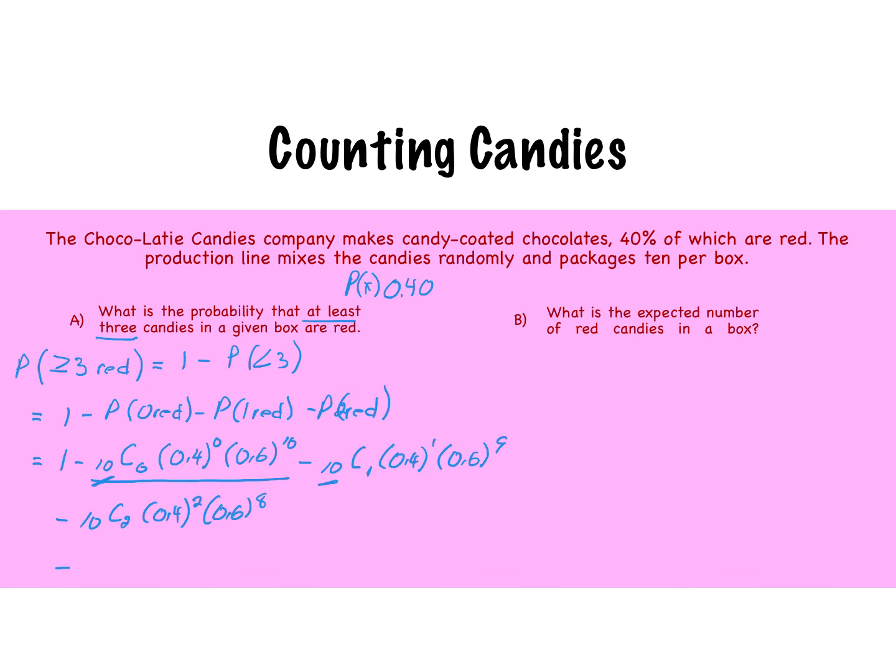And that will equal approximately 0.8327. So there's our probability of at least 3 candies in a given box.